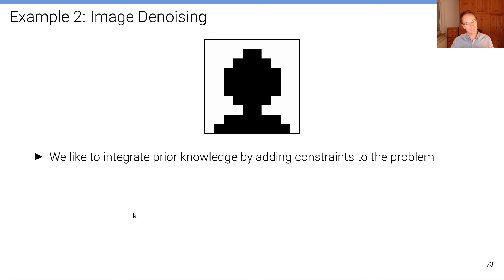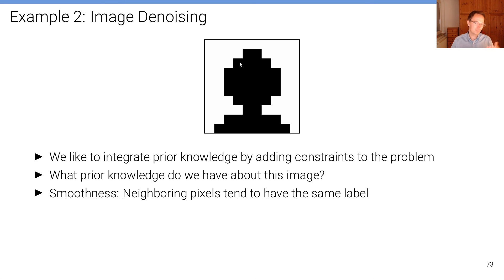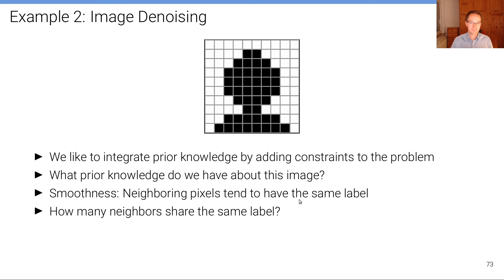So what we do want to do instead now is to integrate prior knowledge by adding constraints to this problem. So what prior knowledge do we have about this image? Assume we know what images typically look like. One thing that was already mentioned is that neighboring pixels tend to have the same label, but can we make this a little bit more concrete? Can we quantify this? How many neighbors actually share the same label? Let's look at this pixel grid here and let's find all the edges that are separating pixels with different color, and these are indicated here in red.